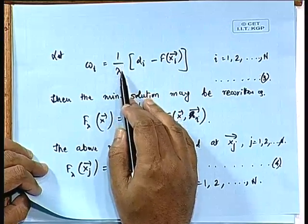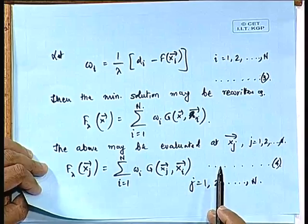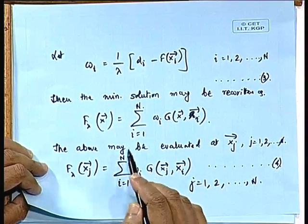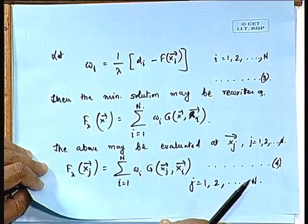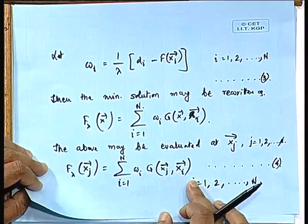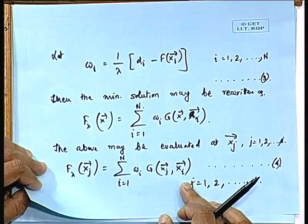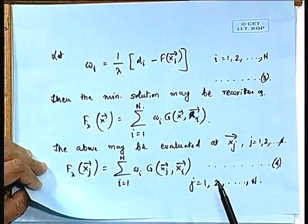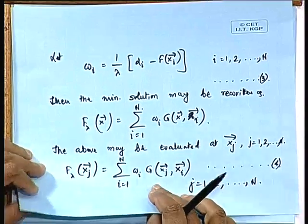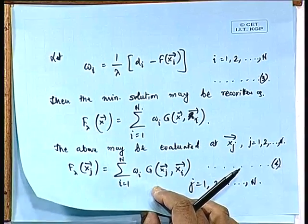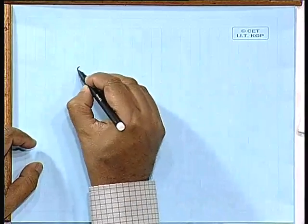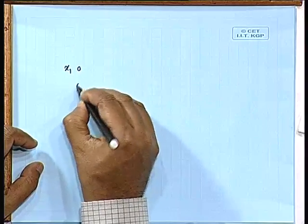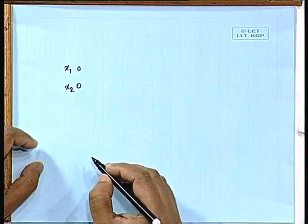We are finding the response of the function at point x_j. The weight w_i is nothing but the difference between d_i and f(x_i) — the desired and the actual output — divided by lambda, where lambda is the regularization parameter. This is the form we had got: a summation from i equals 1 to n, and from this we can construct the regularization network, where the inputs will be the x_i's.